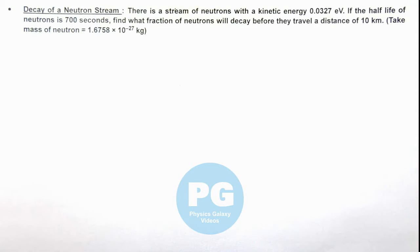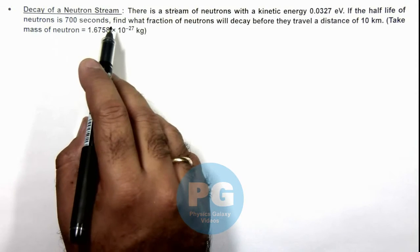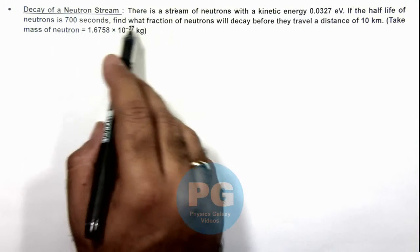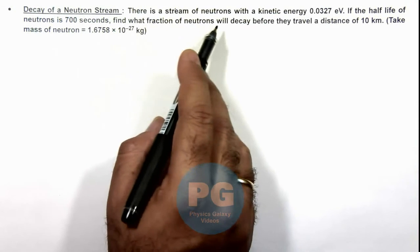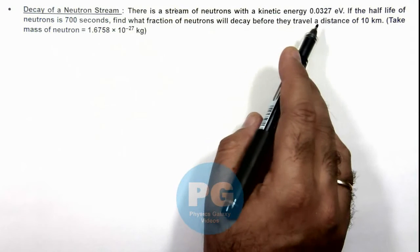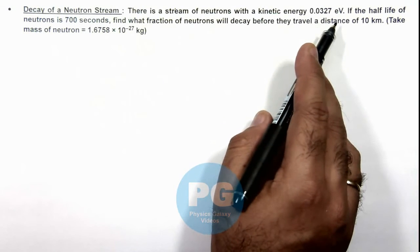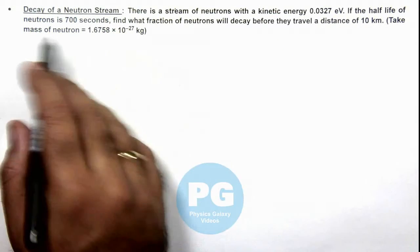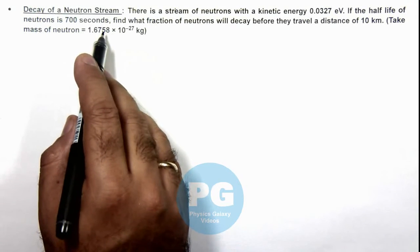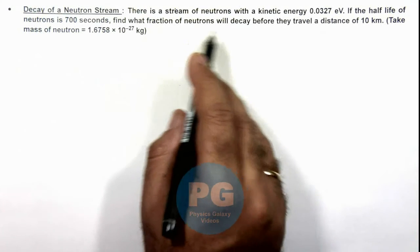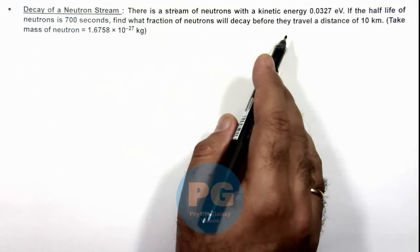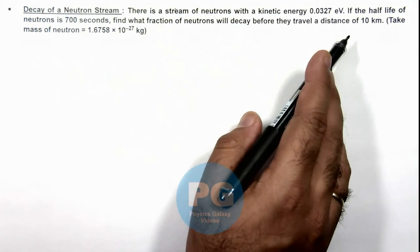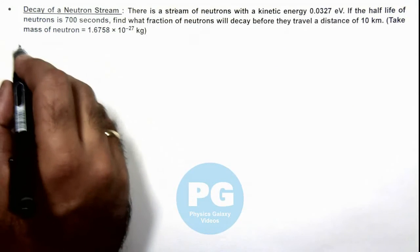In this illustration we'll analyze the decay of a neutron stream. There is a stream of neutrons with a kinetic energy of 0.0327 electron volts. If the half life of neutrons is 700 seconds, we are required to find what fraction of neutrons will decay before they travel a distance of 10 kilometers. We are also given the mass of neutron.